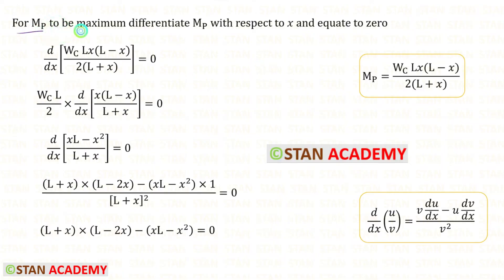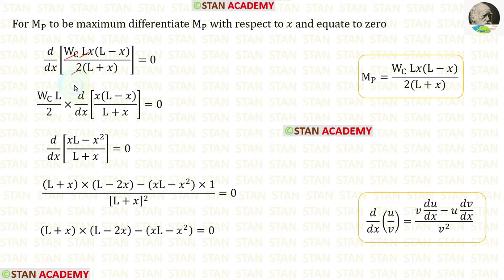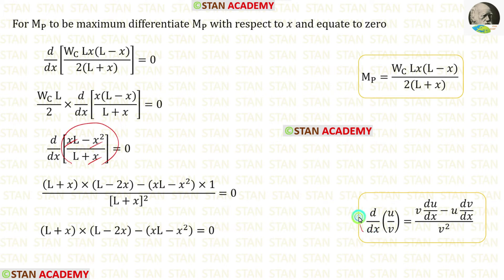For Mb to be maximum, we need to differentiate Mb with respect to x and equate that to 0. We have made this expression for Mb, so we differentiate it with respect to x and equate the differentiation to 0. Wc, L, and 2 are constants, so we can take them outside. In the numerator and denominator we have x, so we have to use the d/dx (u/v) quotient rule formula. In this formula, u is xL minus x² and v is L plus x.